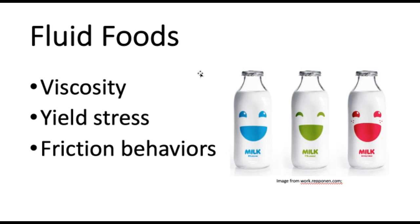We also look at yield stress, or how much force it takes to get that fluid to flow. If you're thinking about milk, you want it to flow very easily — you don't want it to have a high yield stress. Even if it's chocolate milk, you want a little bit of a yield stress to keep that cocoa suspended, but you don't want it to have a really high yield stress. You definitely don't want it to be spreadable. So we can measure the yield stress of a fluid food to get an idea of what its texture is going to be like.